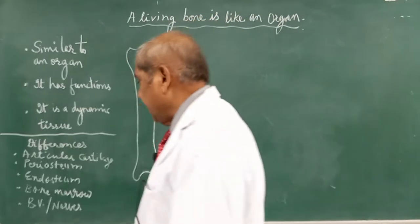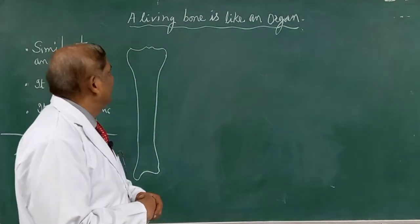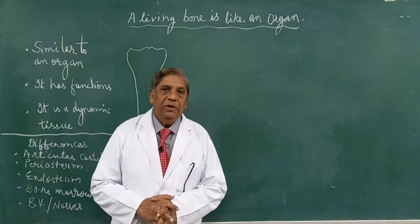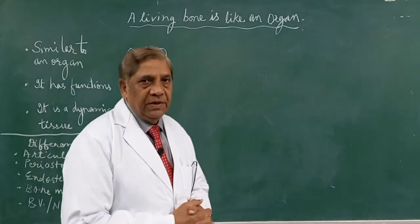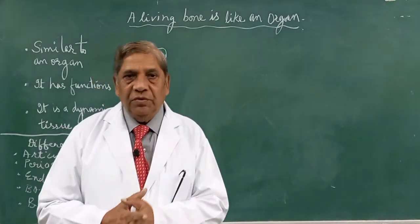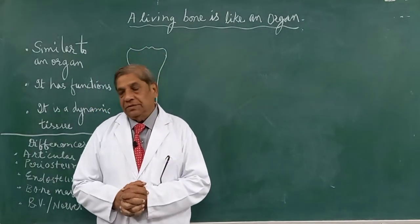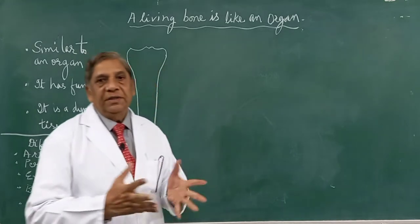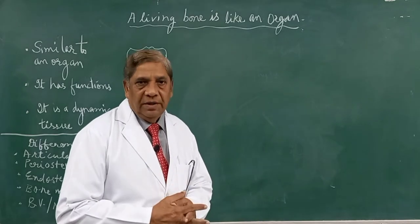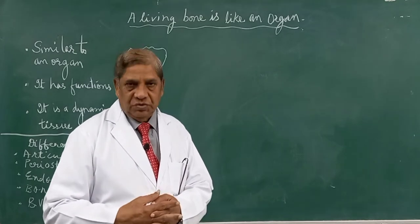Good morning. Yesterday we learned about the parts of a living bone. Today we will go further — I will tell you about the bone itself. Bone is similar to an organ of the body. As you have seen, there are many organs in our body: the liver, the kidney, the spleen, the intestine, and so on. These organs are made up of multiple tissues.